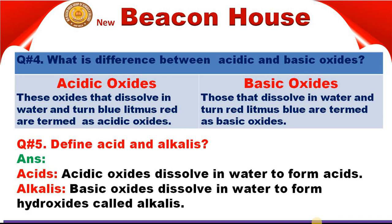Question 4: What is the difference between acidic and basic oxides? Oxides that dissolve in water and turn blue litmus red are called acidic oxides. Basic oxides, on the other hand, turn red litmus paper blue.